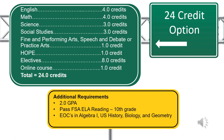The additional requirements you must meet include a 2.0 GPA average, passing the FSA ELA reading exam, passing the Algebra I EOC, and taking the U.S. History, Biology, and Geometry EOC.